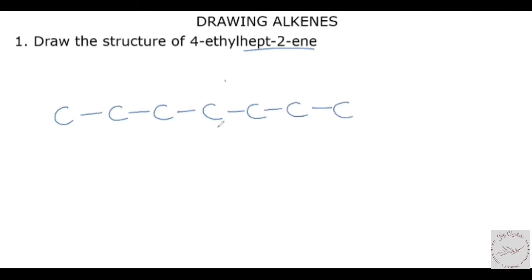We count 1, 2, 3, 4, 5, 6, 7. Now the next thing we look at is the '2' here, which is telling us that at the second carbon, that is where the double bond is located. So if we count from this end, we have 1, 2 — we'll put our double bond here.